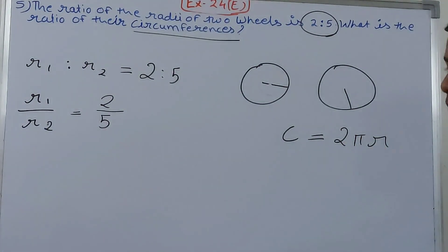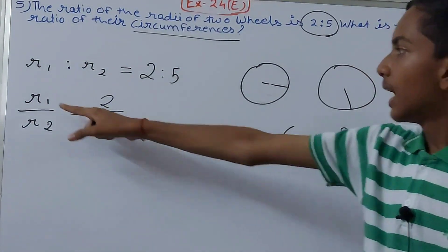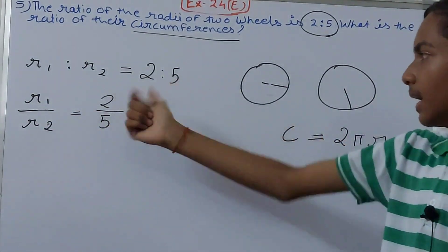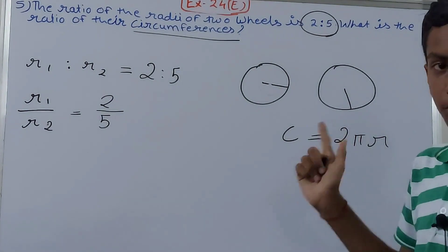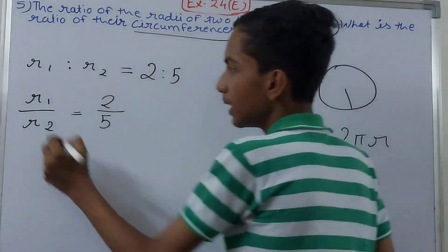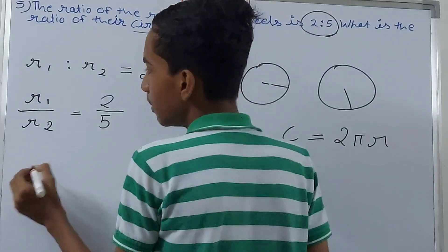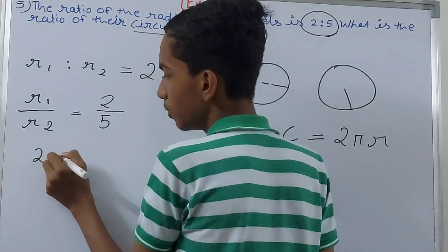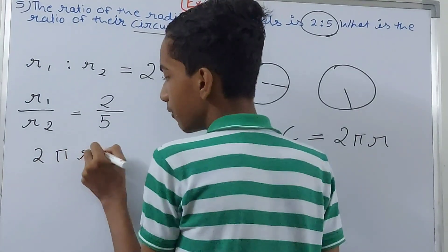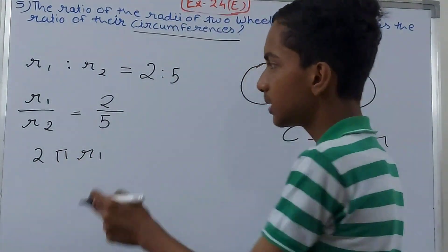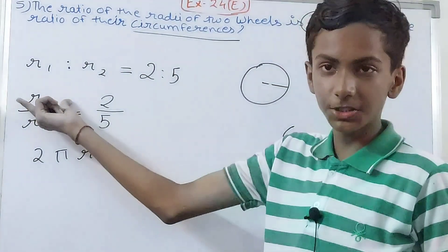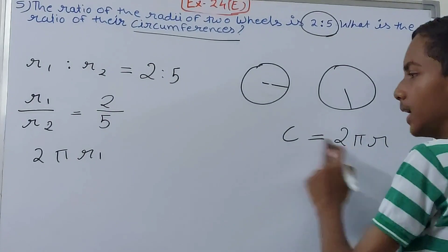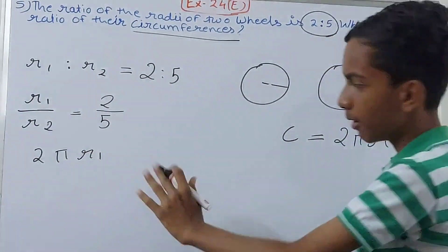What we will do is - radius we already know, two is a constant and pi value we also know. So this will become 2πr1. This is the circumference for the first radius. We put the radius here as r1, 2π as it is.